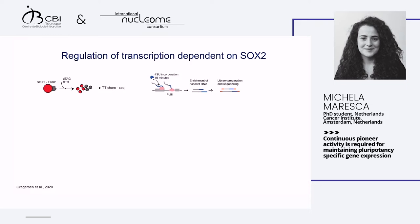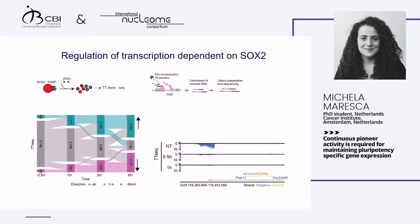Next we want to link accessibility to transcription, so we perform TT-caMC in our SOX2 dTAG background. TT-caMC uses a nucleotide analog — 4sU — incorporated into newly synthesized mRNA, then biotin enrichment to enrich for nascent RNA. After 30 minutes of SOX2 loss we already have hundreds of genes that are down-regulated, and another set of genes that are up-regulated. This number of differentially transcribed genes increases over time. Some transcripts are first down-regulated at one hour and then return to normal transcription levels.